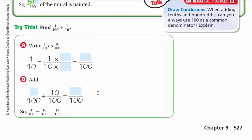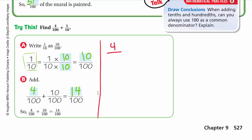Here is another example: 4 hundredths plus 1 tenth. We need a common denominator. I take the 1 tenth and multiply up and down by 10: 10 times 10 is 100, and 1 times 10 is 10. Now I add 4 hundredths plus 10 hundredths to get 14 hundredths. As a shortcut, I can just write one zero up and one zero down, then add 4 plus 10 to get 14 over 100.